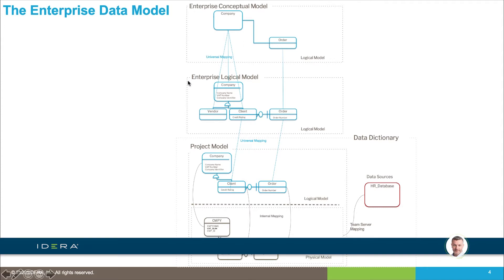The enterprise logical model has more detail. It's attributed, usually in third normal form, and it contains all of the common concepts of the organization. There might be individual entities specific to application models that aren't relevant at the enterprise level. The enterprise logical model contains standardized definitions of concepts with a standard set of attributes and standard data types so we can understand all our information and data assets.